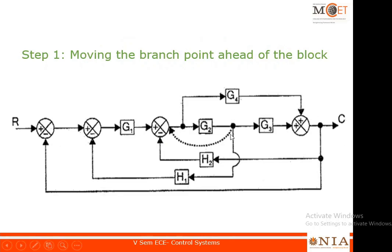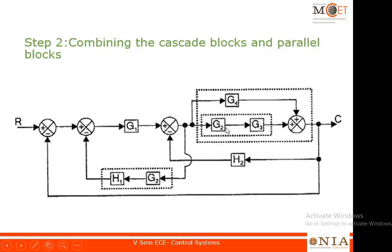The dotted line indicates moving this branching point towards the left. After moving it, the corresponding correction is made: since we jumped g2, this wing is multiplied by g2. As stated, the two fellows are now free to be cascaded, and g2g3 will be in parallel with g4. This entire block can be replaced with a single block g2g3 + g4, and these two are in cascade, giving h1·g2.